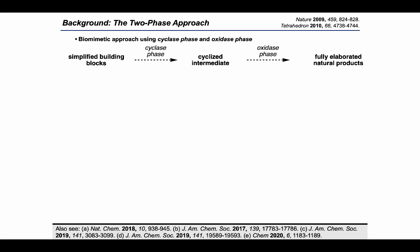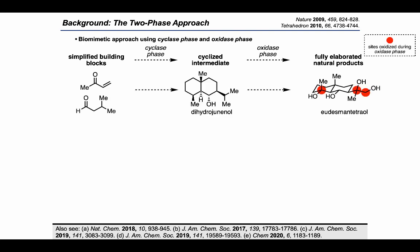We can visualize the generic pathway leading from simplified building blocks to cyclic intermediates through an initial cyclase phase, followed by an oxidase phase that provides fully elaborated natural products. In a foundational proof of concept synthesis, the Baran group showed that starting from methyl vinyl ketone and isovaleraldehyde, they could develop a cyclase phase leading to dihydrodrindol. That intermediate could then be carried on to complete challenging targets including eudesmantetrol by employing distinct oxidase phase sequences.